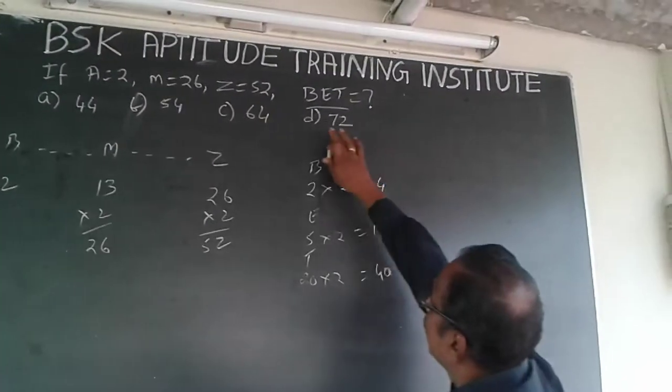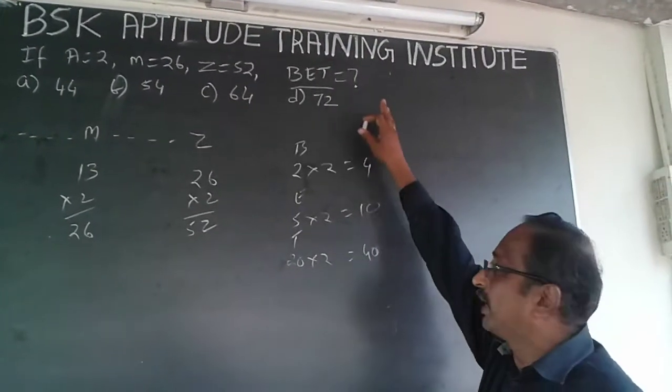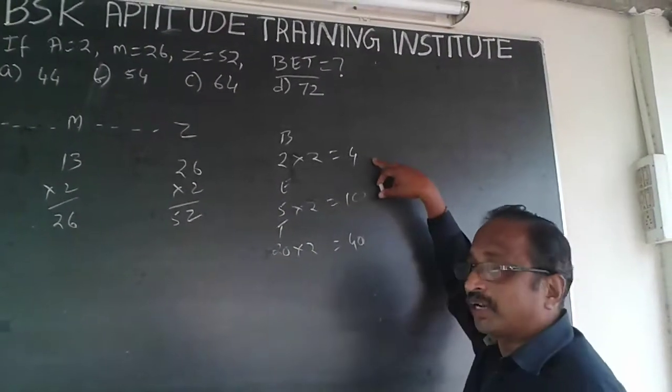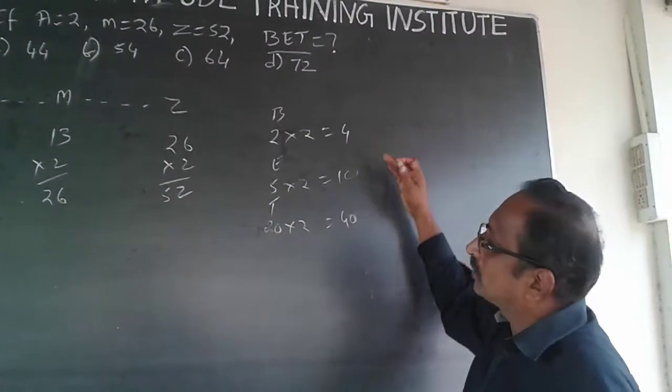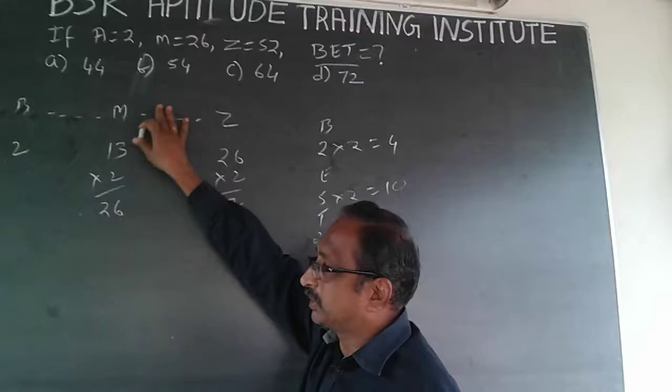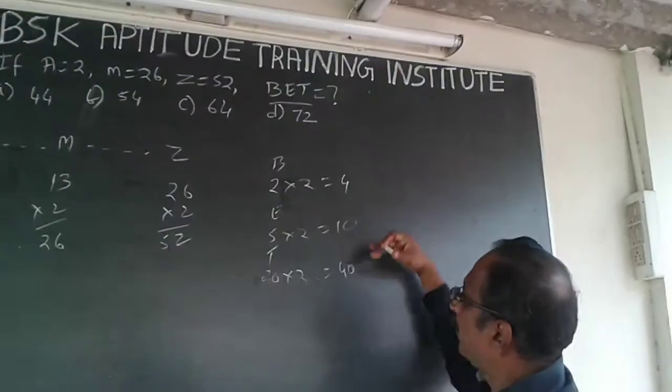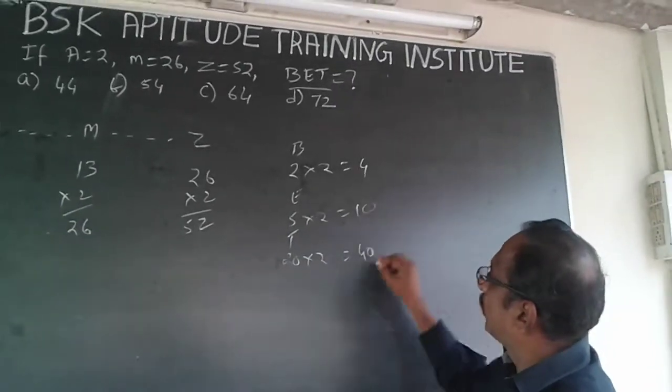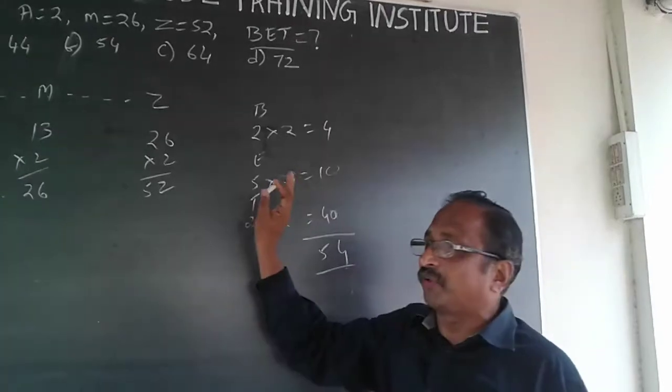So here BET can multiply 40. It is 40 into 10 into 4 is possible. But when you do 40 into 10 into 4, it will be 1,600 which is not there in the options. So the other way of understanding it is, it could be sum to 40 plus 10 plus 4 is 54. When I add all this, this is 54. This is the way of doing it.